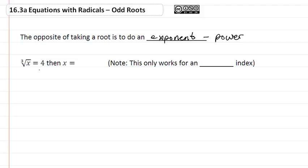Now, if we have the cubic root of x equals 4, then x equals 4 cubed. Now, note that this only works for an odd index. We have some other rules that happen when we have an even index.